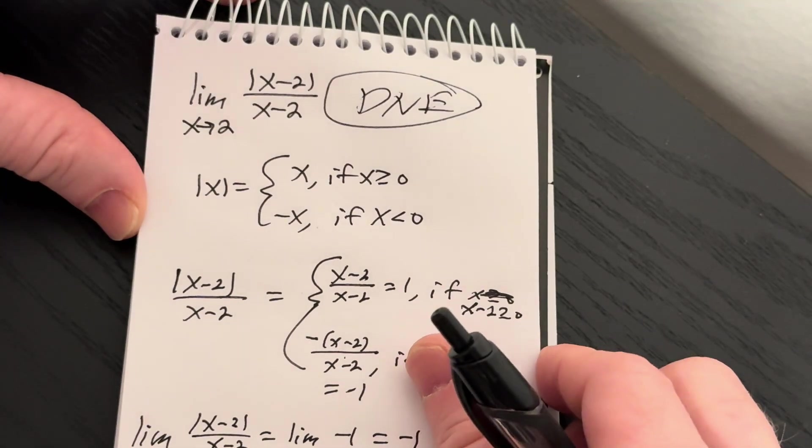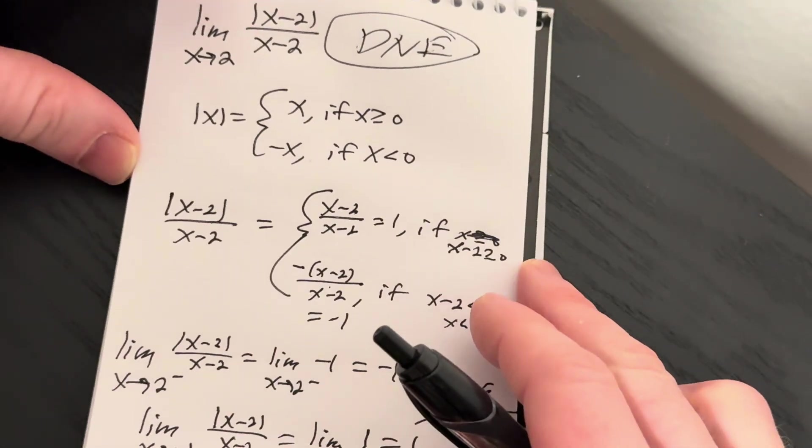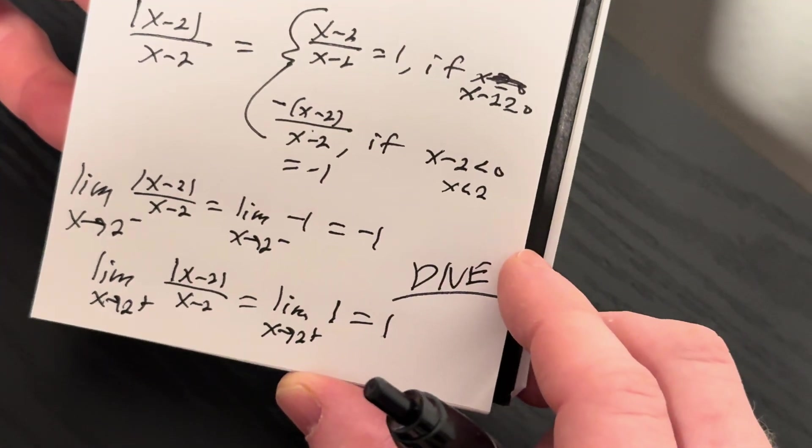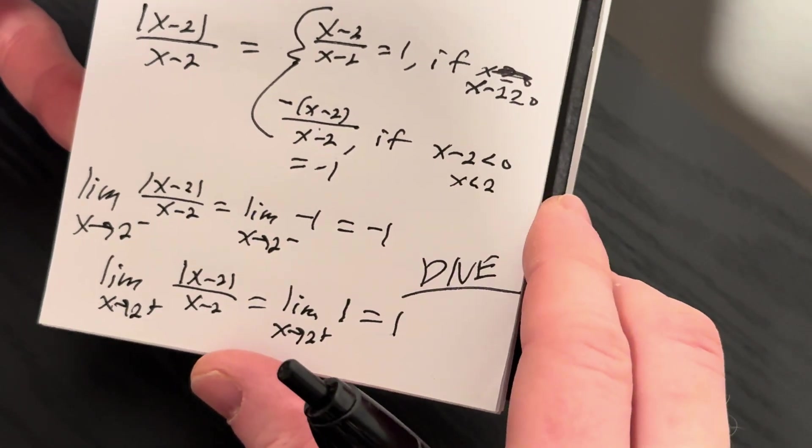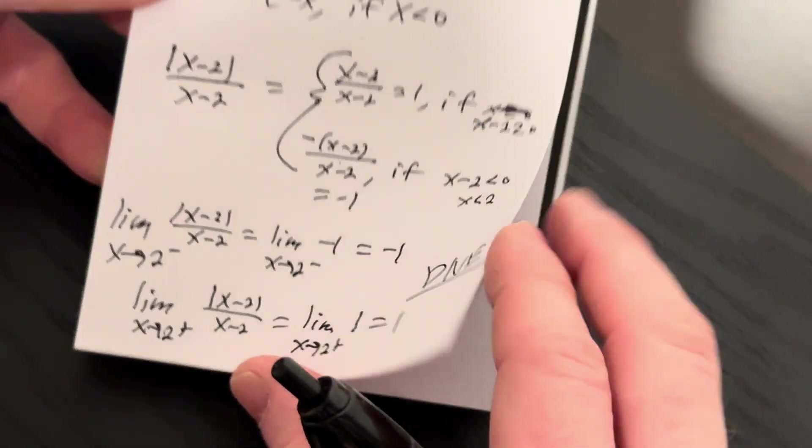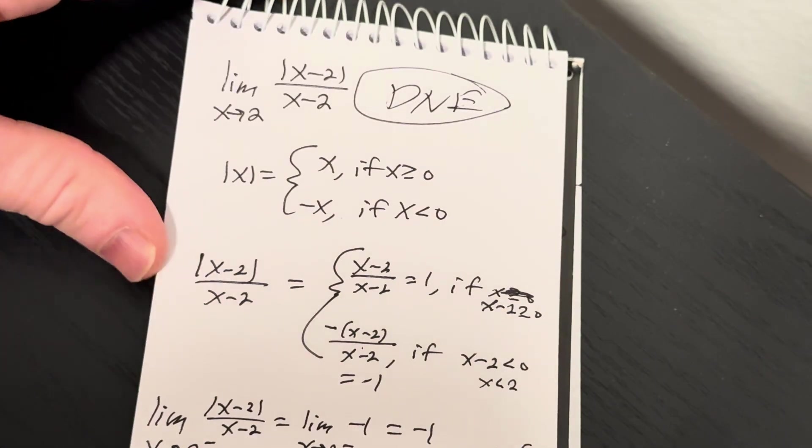So we're asked to find the limit, and it turns out that the limit does not exist because the one-sided limits are unequal. So they actually exist, but they are different. I hope it's been helpful. Take care.